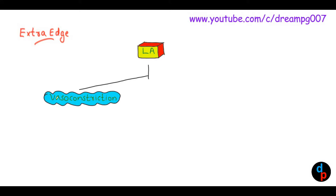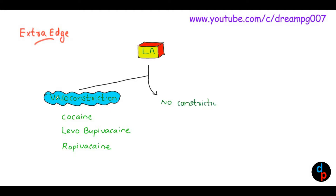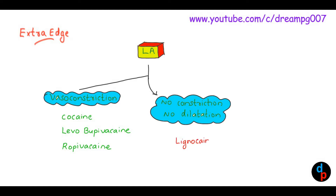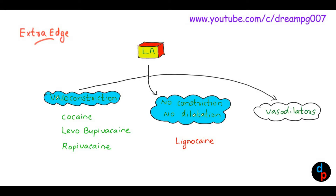Local anesthetics with vasoconstriction action include cocaine, levobupivacaine, and ropivacaine. The local anesthetic which neither has vasoconstriction nor vasodilatation is lignocaine. All the rest of the local anesthetics are vasodilators.